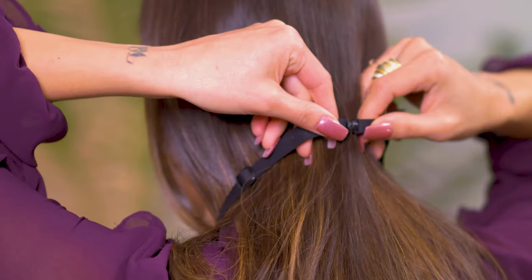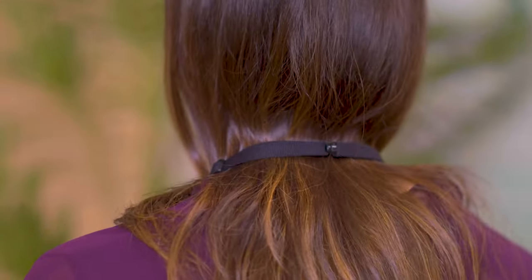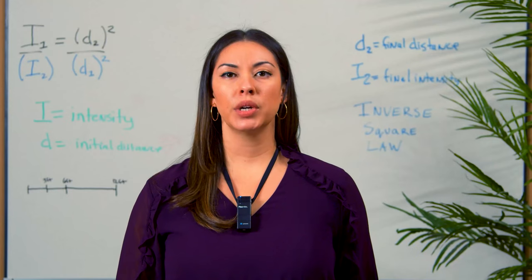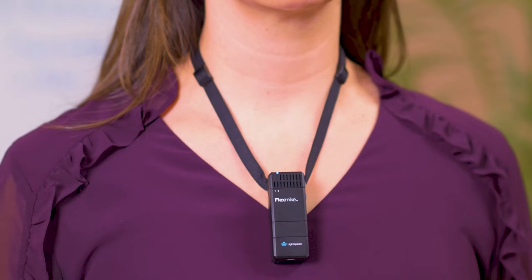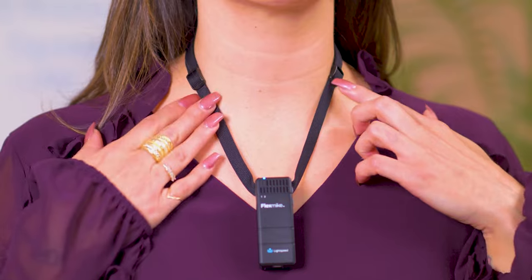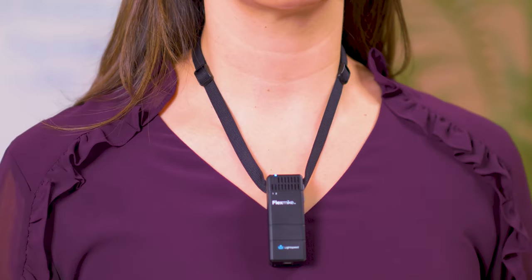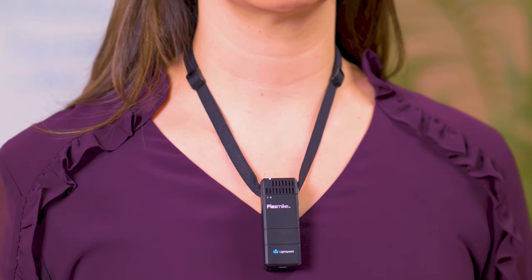FlexMic hangs comfortably around your neck with its magnetic lanyard. You'll want to adjust it to the proper length using the adjusters on the side so the top of the microphone sits just below your collarbone.